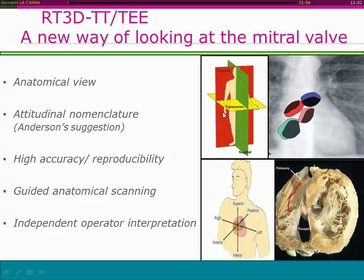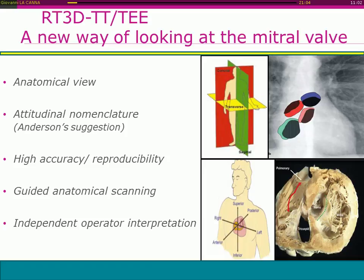The introduction of three-dimensional echocardiography has enhanced ultrasound capability in mitral valve imaging, providing advantages over two-dimensional echocardiography in terms of anatomical view and attitudinal nomenclature — meaning 3D can provide imaging according to the position of the heart in the body, with eye accuracy, reproducibility, guided anatomical scanning, and independent operator interpretation, providing a truly new way of looking at the mitral valve.